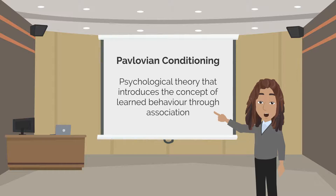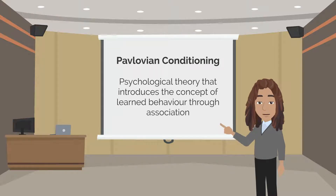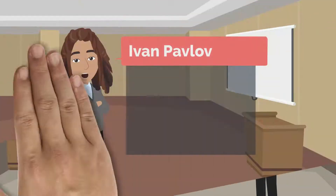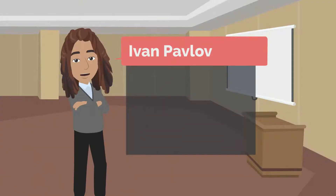Classical conditioning, popularly known as Pavlovian conditioning, is a psychological theory that introduces the concept of learned behavior through association. It was formulated by Russian physiologist Ivan Pavlov in the early 20th century.